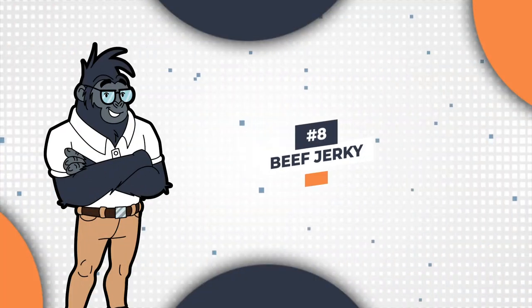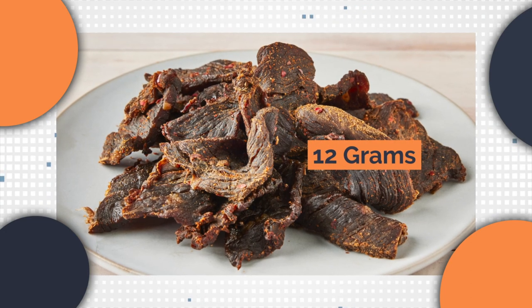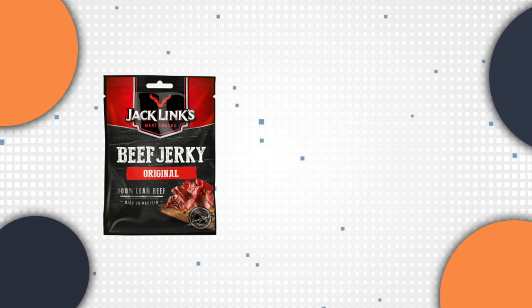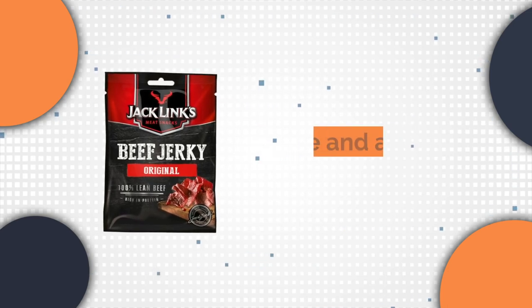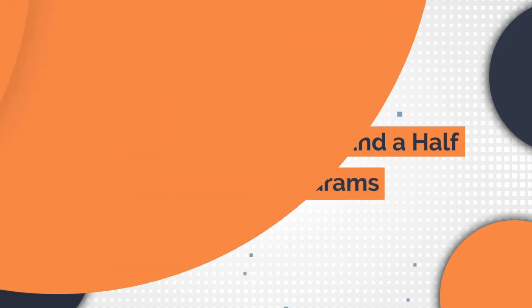Next on our list is a snack that's high in protein, beef jerky. One ounce of Jack Link's original beef jerky provides 12 grams of protein and only 45 grams of carbs. If you buy a smaller package, which contains about 3.5 servings per pouch, you can easily consume over 40 grams of protein in one sitting.